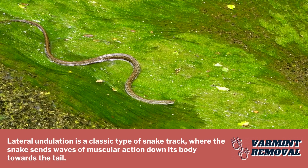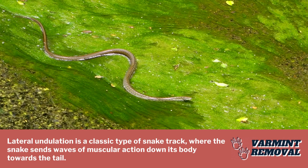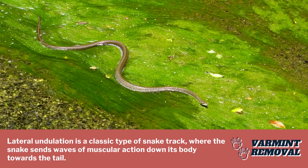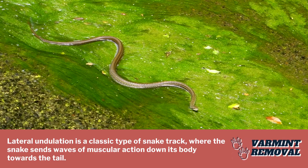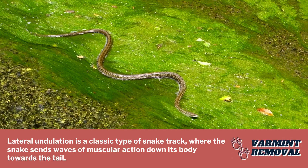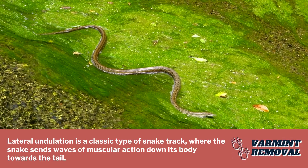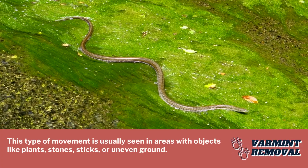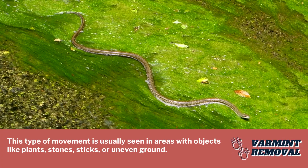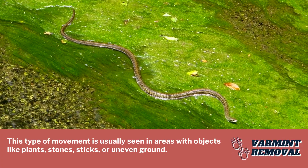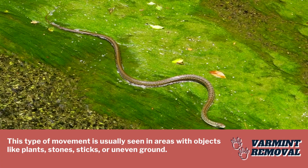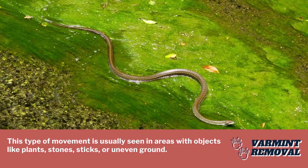Lateral undulation is a classic type of snake track where the snake sends waves of muscular action down its body towards the tail. This type of movement is usually seen in areas with objects like plants, stones, sticks, or uneven ground.